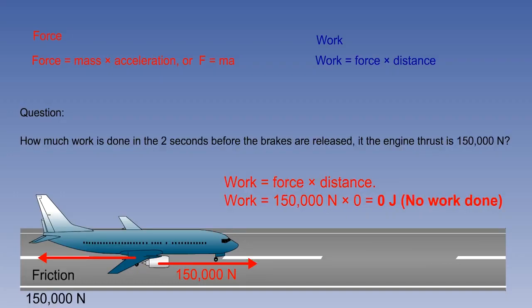Work is found by multiplying the size of the force by the distance the force moves the object. Prior to the take-off run, when the engines are spooling up and the aeroplane is held on the brakes, there is considerable thrust, but because the aeroplane is stationary, there is no work done.